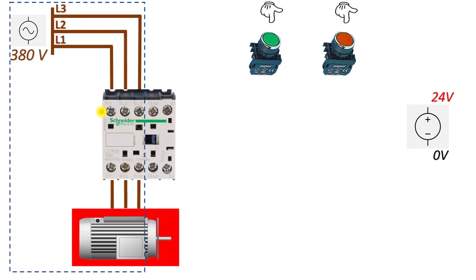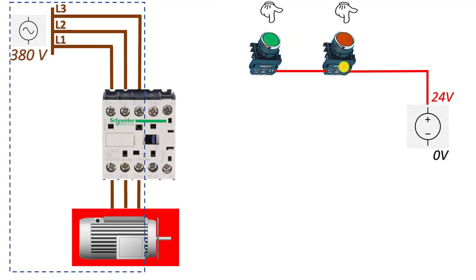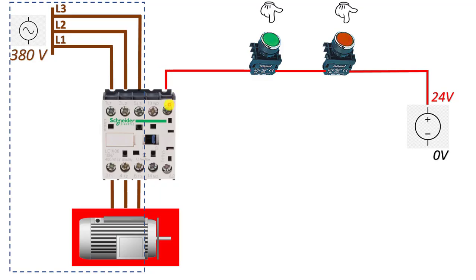For the control circuit, I exit the 24-volt power supply from the plus side and enter the stop button. I jump from the stop button to the start button, then exit the start button and connect to the A1 coil leg of the contactor to send the necessary trigger. I enter the A1 coil leg. My 24-volt connection from the plus side of the power supply to A1 is now made.